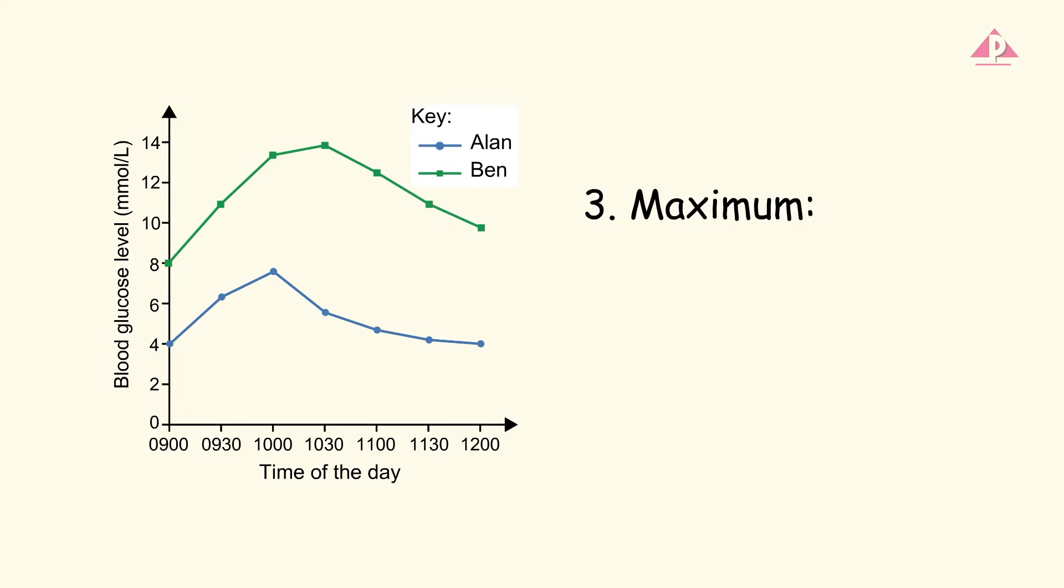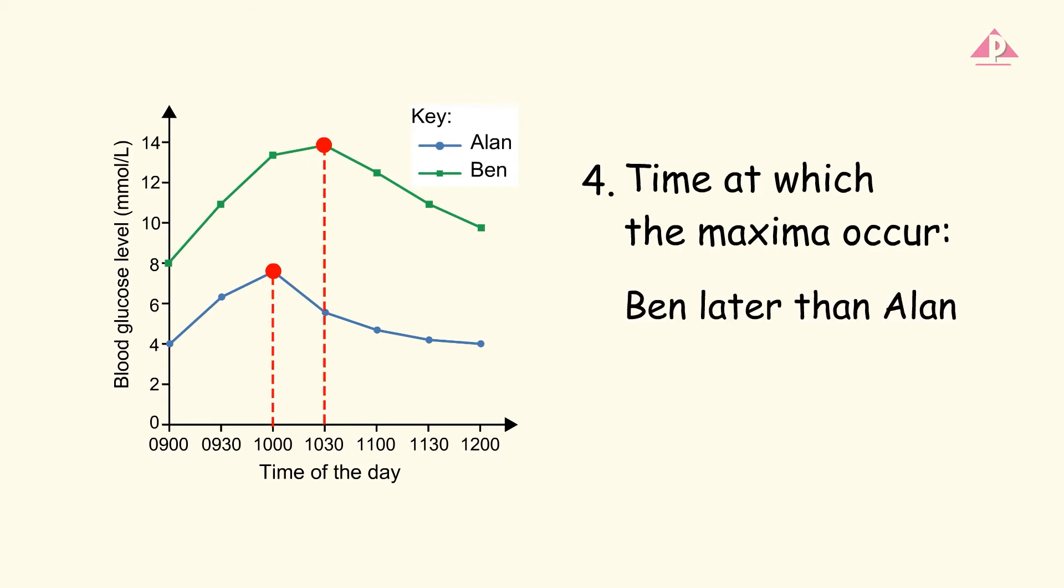We should also compare the maxima. Ben's blood glucose level reached a higher maximum than Alan's. Then, compare the time at which the maxima occur. Ben's blood glucose level reached a maximum later than Alan's.